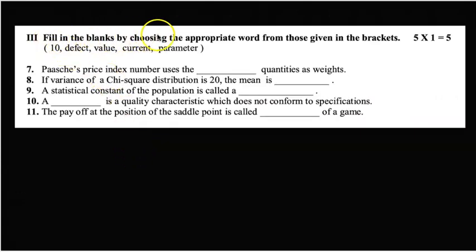Third mean: fill in the blanks by choosing the appropriate word from those given in the brackets. 5 × 1 = 5. Seventh one: Pache's price index number uses the blank quantities as weights. The correct answer is the current year quantities as weights.